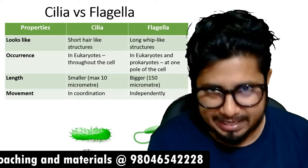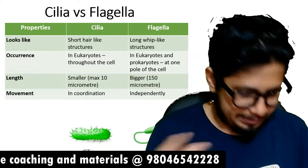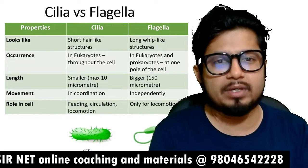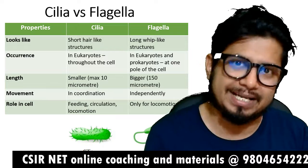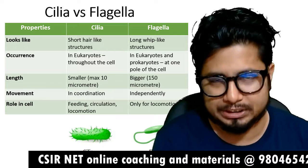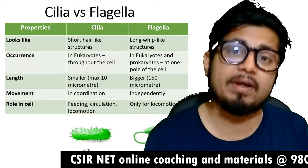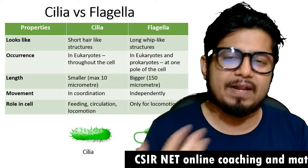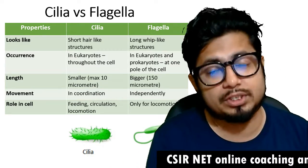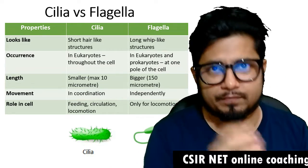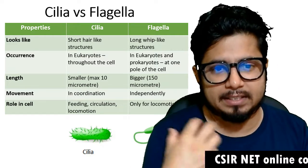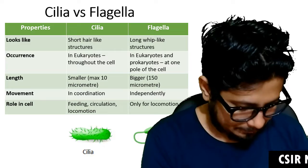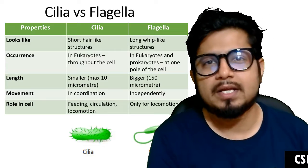The role of cilia in the cell includes feeding, circulation, and locomotion. Flagella, on the other hand, are only used for locomotion — needed for bacterial locomotion to search for food, and flagella movement is also required for eukaryotic sperm motility.